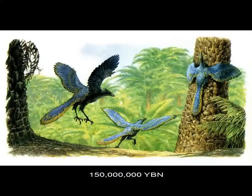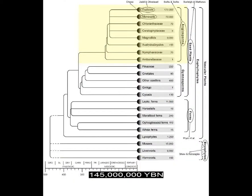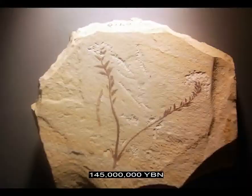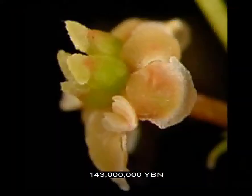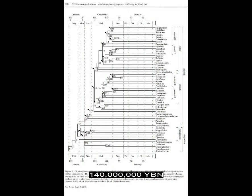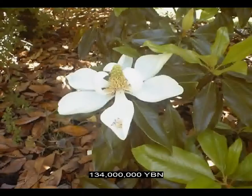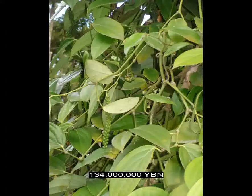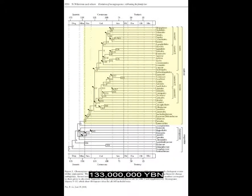Birds evolve. The first feather. Seed plants, angiosperms — the first flowering plant. Almost all grains, beans, nuts, fruits, vegetables, herbs, and spices come from plants with flowers. Earliest extant flower: Amborella. Flowers Nymphaeales — water lilies. Flowers Magnoliales — magnolia, nutmeg, avocado, cinnamon, black pepper. Flowers eudicots evolve — the largest lineage of flowers.